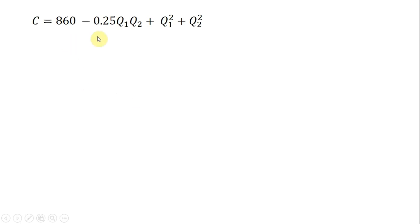So here, once again, is the cost function. First thing we'll do is get the marginal cost of producing good 1 by taking the partial derivative of the cost function with respect to good 1. So the 860, that's a constant, so that's just 0.